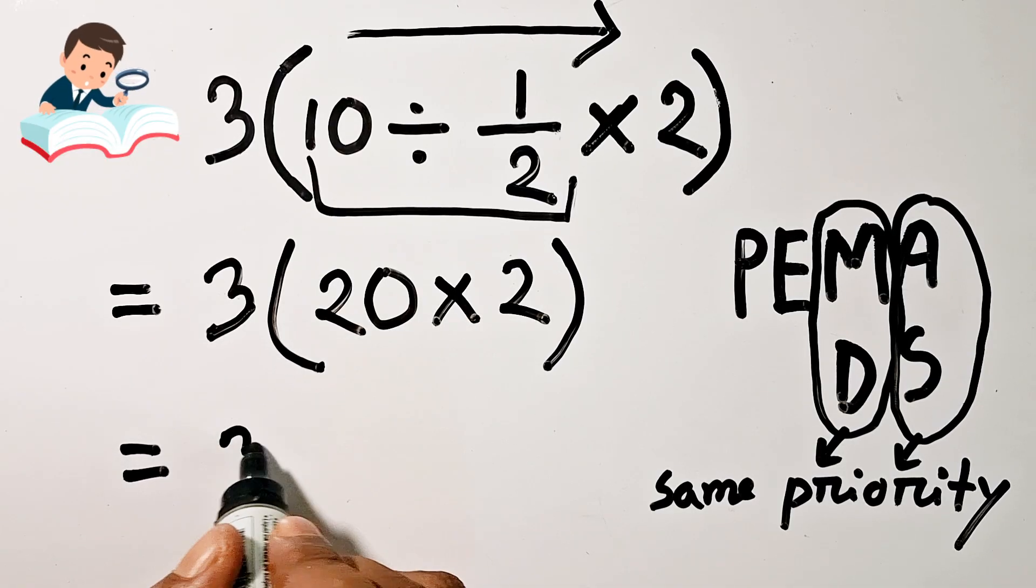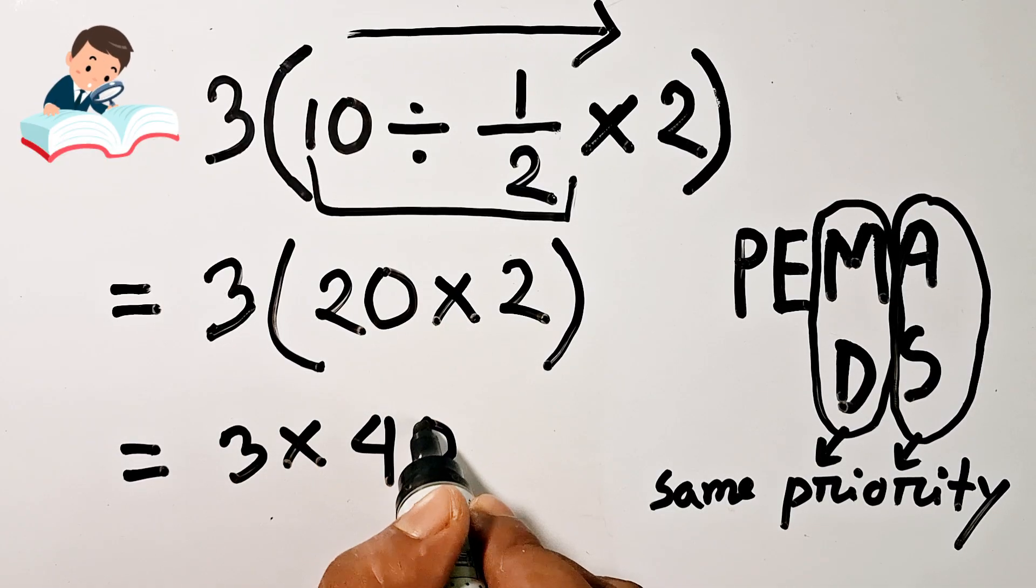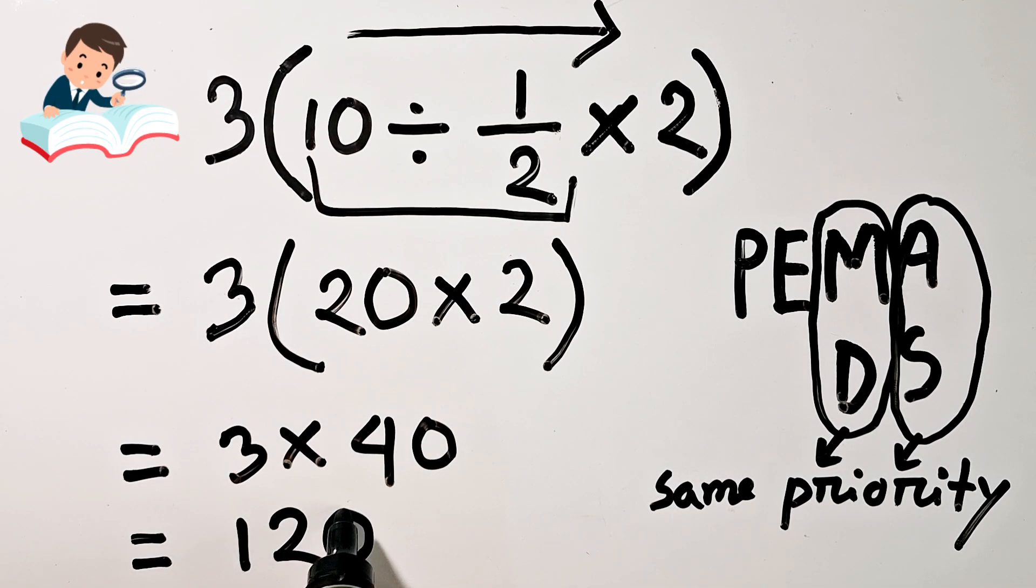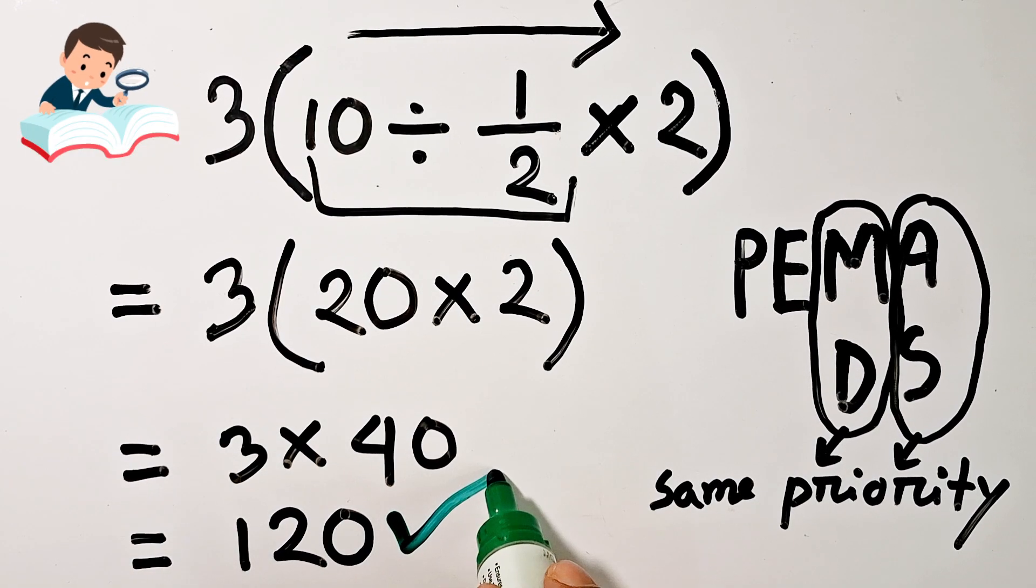So 3 times 40, 3 times 40 is equal to 120. That is the right answer.